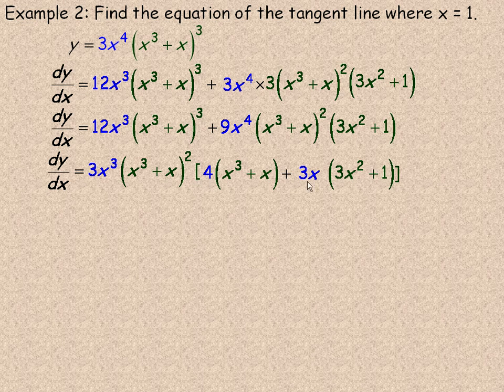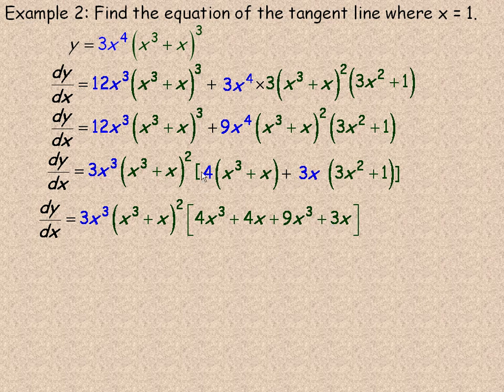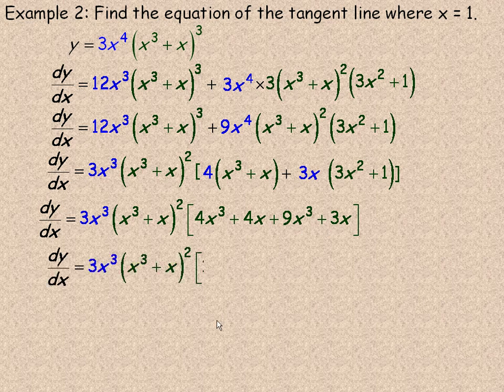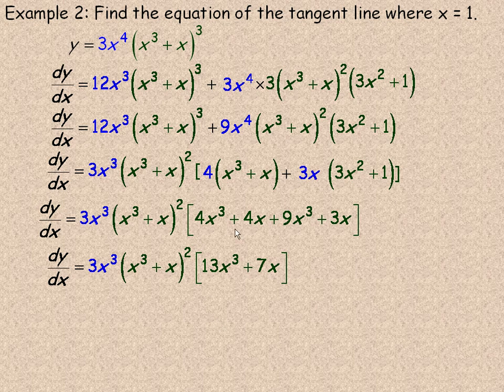Now I want to just simplify what's in here. So I'll just expand the 4 in and the 3x in here. So 4 times x cubed plus x would be 4x cubed plus 4x. And then 3x times 3x squared would be 9x cubed. 3x times 1 is 3x. And I'll collect the like terms. And so this is the simplest version of my derivative. Well, 4x cubed and 9x cubed is 13x cubed and 4x to 3x is 7x.